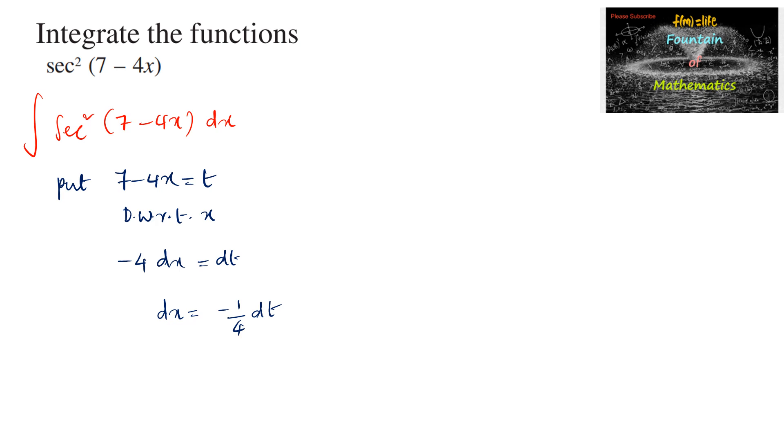So our integral we can write as integral of secant square t into minus 1 by 4 dt.